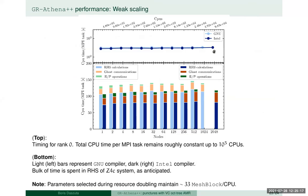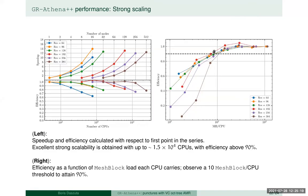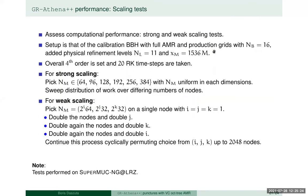In response to a question: the mesh blocks are set up exactly as in the production runs used previously. A given mesh block has 16³ interior grid points, not counting the ghosts and not counting the coarse level representation.